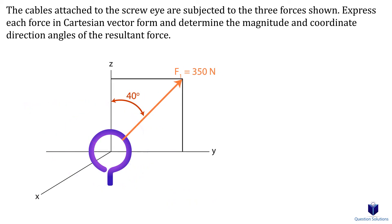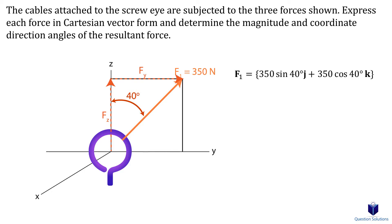Let's focus on force F1 and write it in cartesian form. The Y component is opposite to the angle, so it'll be sine, and the Z component is adjacent to the angle, so it'll be cosine. Remember, X components are represented by I, Y components by J, and Z components by K. Since force F1 doesn't have an X component, it'll be zero.